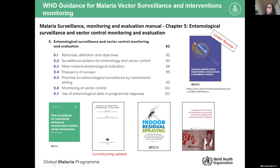There is this key document currently under review called 'Malaria Surveillance, Monitoring and Evaluation' — a manual providing guidance on how to conduct malaria surveillance. It has a specific chapter, Chapter 5, which talks about entomological surveillance and vector control monitoring and evaluation.